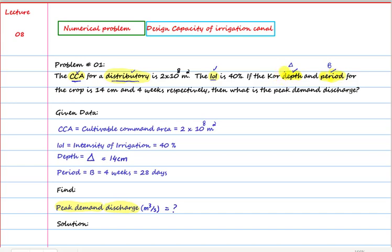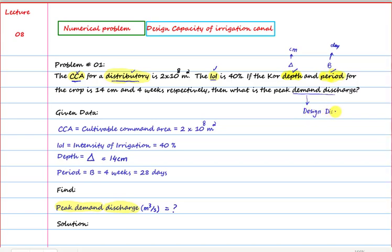All these terms were discussed in lecture number seven to make things easier. Depth is always in centimeters and period is in days, so 4 weeks converts to 28 days. We are asked to find the peak demand discharge. Peak demand discharge is the same as design discharge.